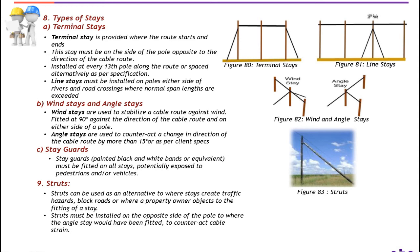Number three: struts — struts can be used as an alternative where stays create traffic hazards, block roads, or where a property owner is subject to the fitting of a stay. Struts must be installed on the opposite side of the pole to where the angle stay would have been fitted, to counteract cable strains. In the pictures there are different types of stays shown.